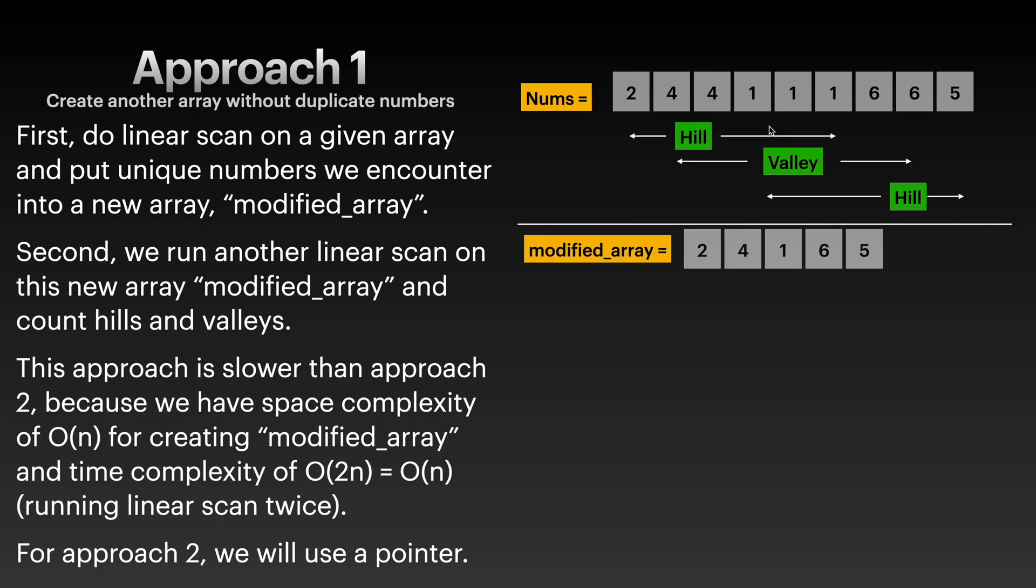This approach has what time complexity? O(n). Actually it's 2n, but we don't care about this constant number. My second approach is also O(n), but we only run this linear scan once. Here we're scanning - we do linear scan twice, right? Forming this modified_array and then we have to work on our modified_array to determine, to count how many hills and valleys we have in this new array.